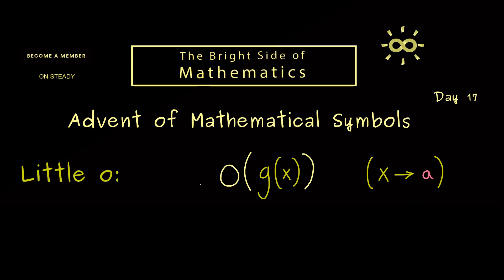Now in this little o notation, we usually use an equality sign in a symbolic way. So we would say another function f is equal to little o. However, as for the big O notation, an element relation here would be the formal correct way. Nevertheless, of course this is not so important. The important thing is that you know the meaning of this expression.